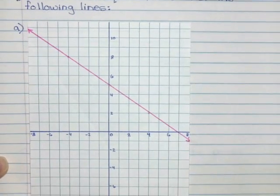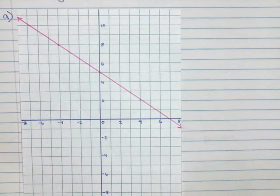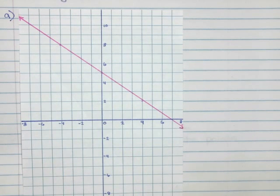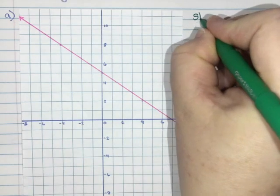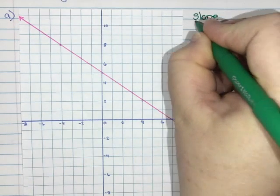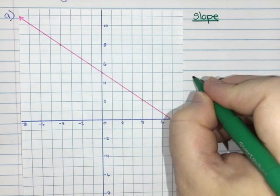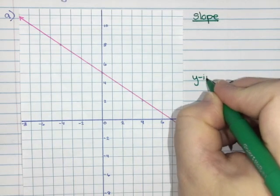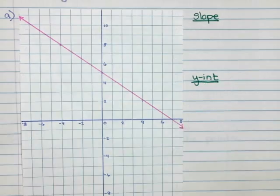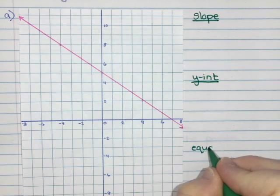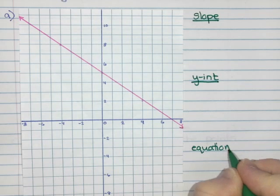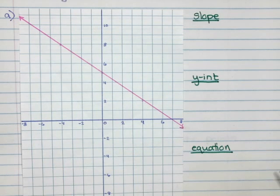When you are finding the equation of a line, we always do it in the form y equals mx plus b, which means we need to know what m, or the slope, is and b, which is our y-intercept. Then we will use those two things together to help us find our equation.